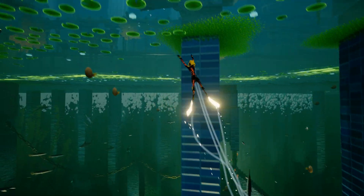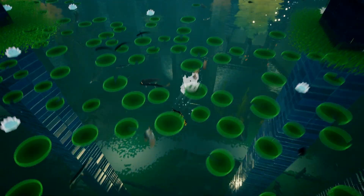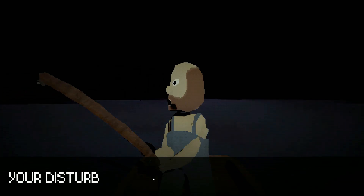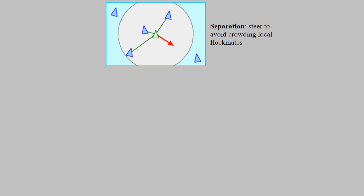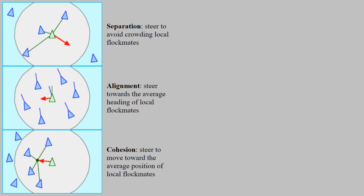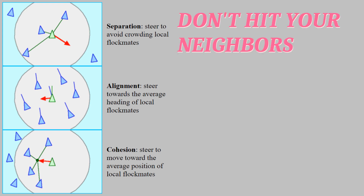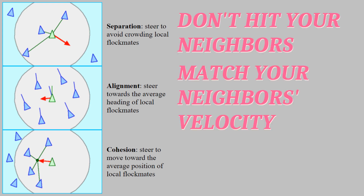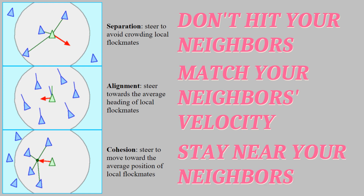So what are the rules Reynolds lays out for proper flocking behavior? At the core of it, there are just three: separation, alignment, and cohesion. In English, that means each individual Boid should: 1. not hit its neighbors, 2. attempt to match the velocity of its neighbors, and 3. stay close to its neighbors. You could add additional rules like follow a leader or avoid collisions with the environment, but these three are all I need to hit the ground running.